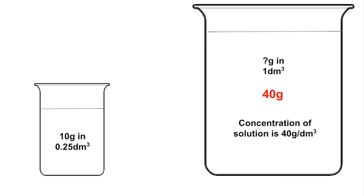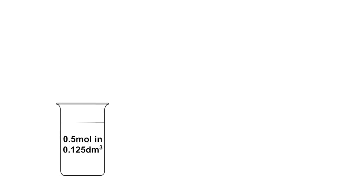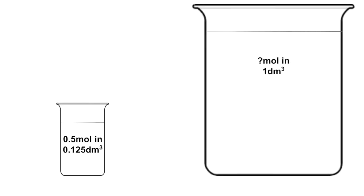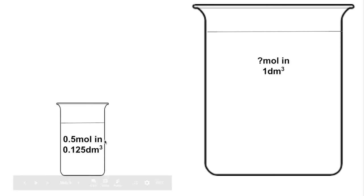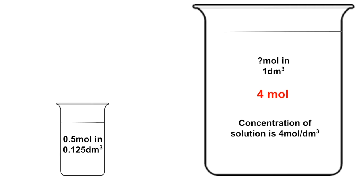Now a moles per decimetre cubed example: we've got 0.5 of a mole in 0.125 dm³ — that's one eighth of a dm³. Multiplying the volume by eight, we also multiply the moles by eight, giving 4 moles in one dm³. So this solution has a concentration of 4 mol/dm³.